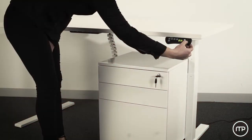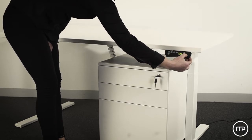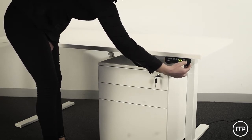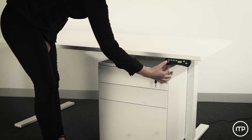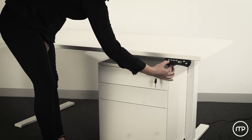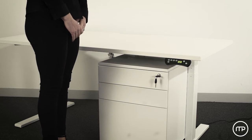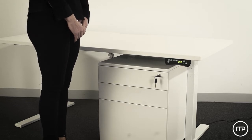To set a lower limit position, adjust the worktop down to the desired lowest position. Within three seconds, press and hold the S button until the LCD display flashes S once and release. Then press the S button two times in quick succession. The LCD display will briefly change to 000 before returning to the selected height. The worktop will no longer be able to be adjusted below this point.